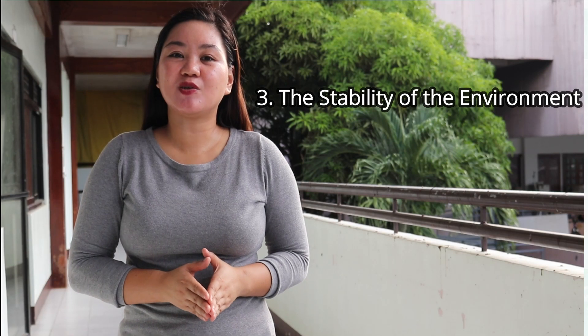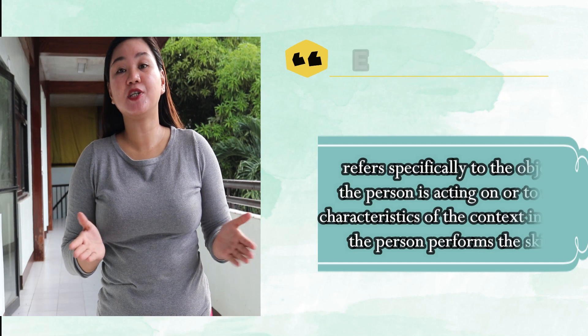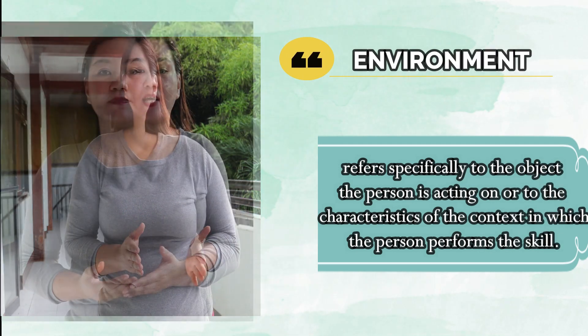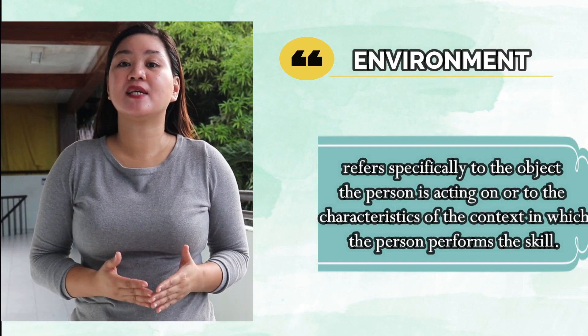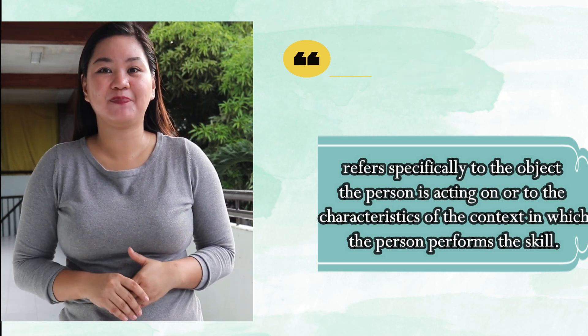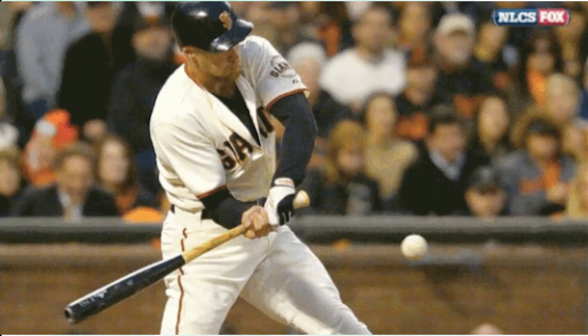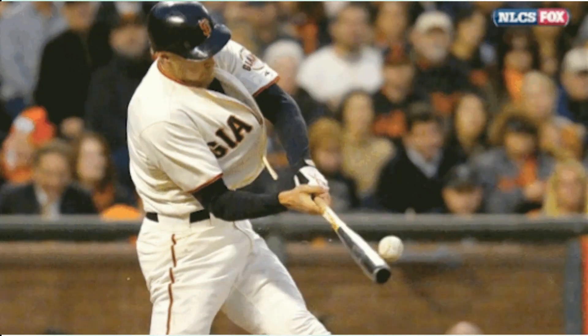Number three characteristic is the stability of the environment. One classification system has its roots in industrial, education, and rehabilitation settings. For this classification system, the term environment refers specifically to the object the person is acting on and to the characteristics of the context in which the person performs the skill. For example, if a person is hitting a ball, the critical component of the environment is the ball itself. For the skill of walking, the critical environmental features are the surface and the characteristics of the context in which the person must walk.